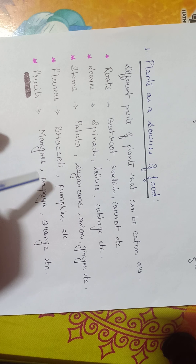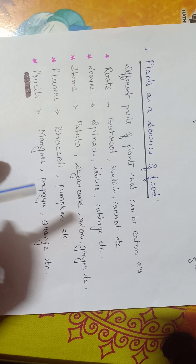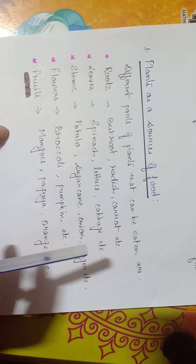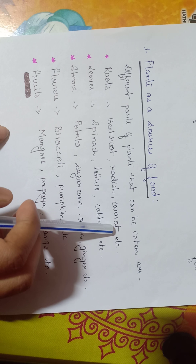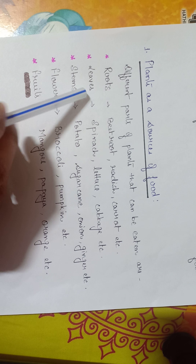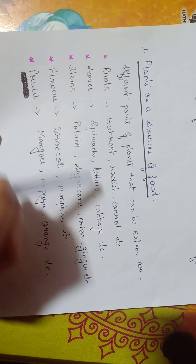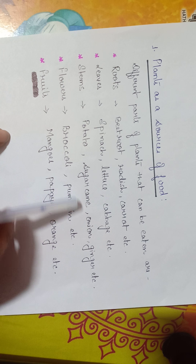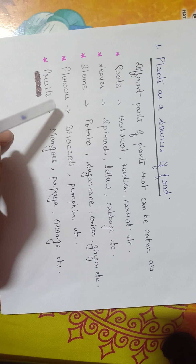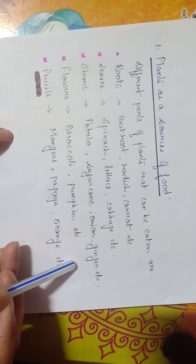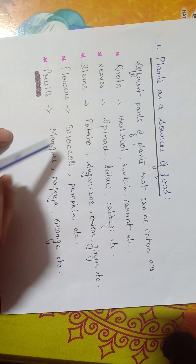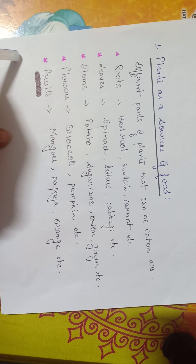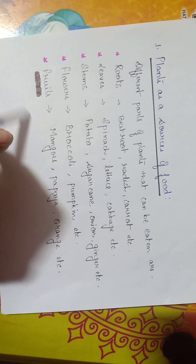Now, plant as a source of food. Plants have different parts, and different parts of the plant can be eaten. Roots — for example, beetroot, radish, carrot. Then leaves — spinach, lettuce, cabbage. Then stem — which includes potato, sugarcane, onion, ginger, etc. Flowers — which include broccoli, pumpkin, etc. And fruits, which are liked by everyone — mango, papaya, orange, etc. So these are the different parts of the plant which we use as a source of food.